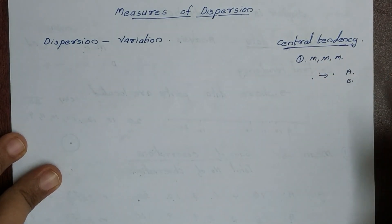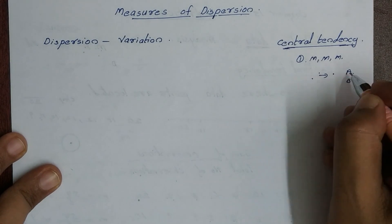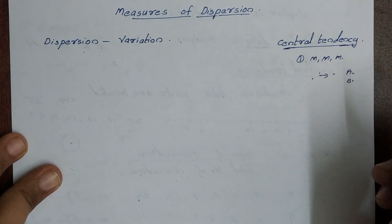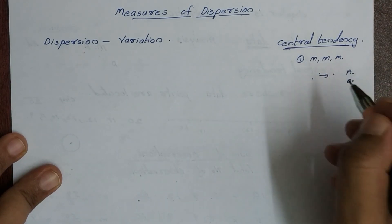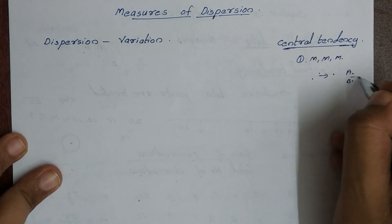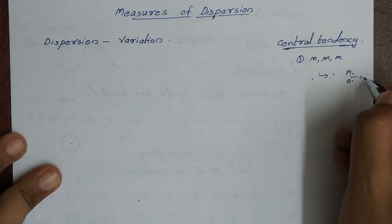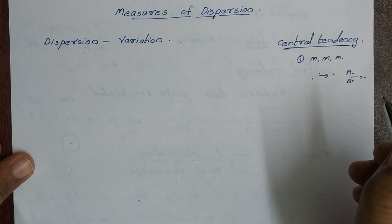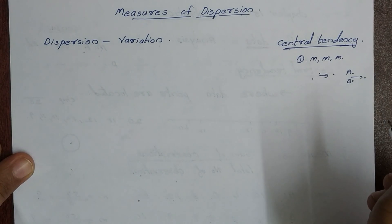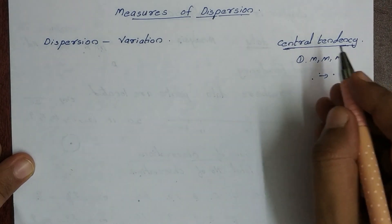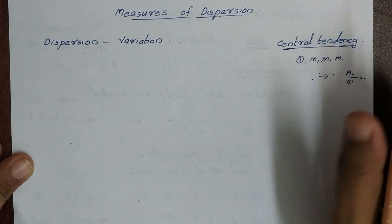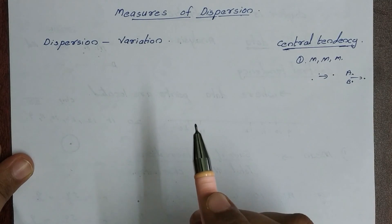This is the limitation of mean, median, and mode. That is why one student has marked this mean-median-mode. If we have a limitation to overcome, we will use dispersion.